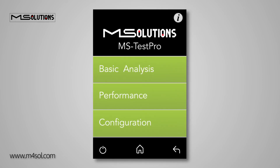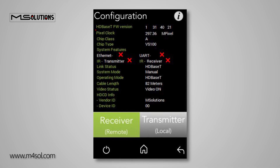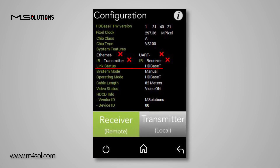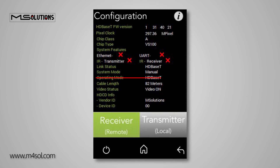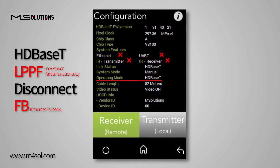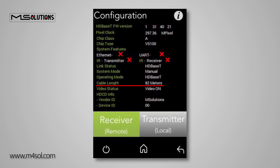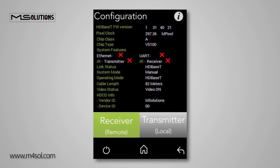Now let's go back to the HDBaseT Analyzer menu and select Configuration. On the Configuration screen, we can access more detailed information, including the firmware version of the HDBaseT chip, the pixel clock, the type of chip and chip class, support for Ethernet, RS-232 and infrared, HDCP and HDBaseT status. It indicates whether the system is operating manually or automatically, as well as the operational state: HDBaseT, LPPF low power partial functionality, disconnect, FB, Ethernet fallback or bypass mode. You can also see the length of the HDBaseT cable within an accuracy of 10%. At the bottom, the video status is denoted as being on or off, and the presence of HDCP is indicated. You can view this information for both the receiving and transmitting end by tapping on their respective buttons.